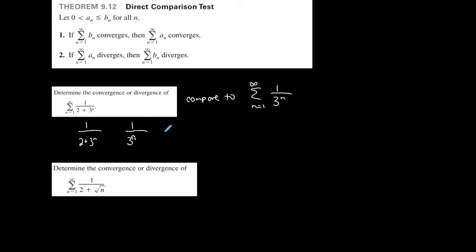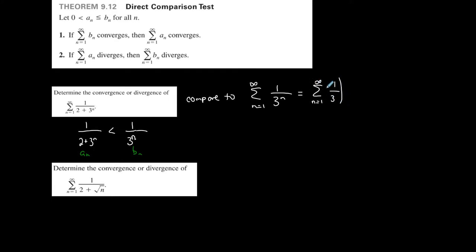Remember: the greater the denominator, the smaller the fraction. This denominator (2 plus 3^n) will always be larger than 3^n, because I'm basically taking 3^n and adding 2. This means that 1/(2+3^n) will always be less than 1/3^n. So 1/3^n is my b_n — the larger nth term — and 1/(2+3^n) is my a_n, the smaller nth term. Let's see what happens to b_n.